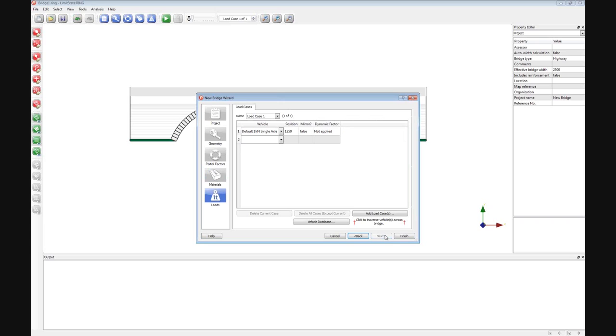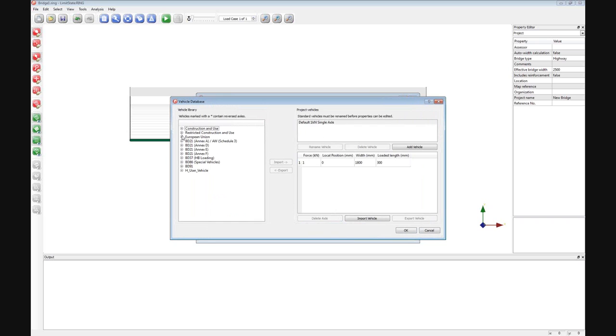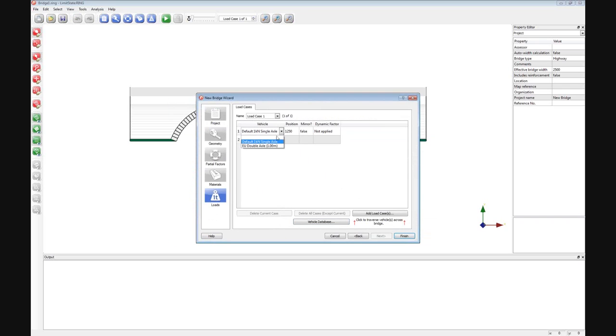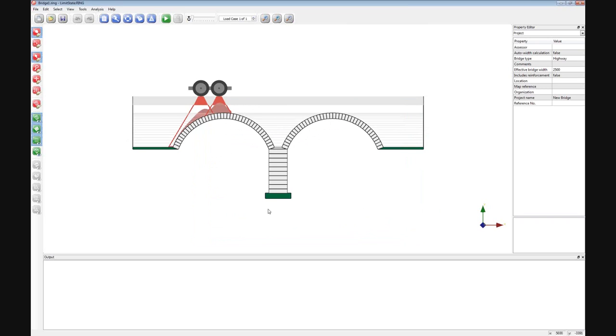And then finally in the wizard we move on to the load case area. By default we've got a 1kN single axle, but if I click the vehicle database, then you can see that we've got a series of vehicles built into the software which we can use for the bridge in question. So for example, I might want to choose an EU European Union double axle loading, where we've got two axles at 1m centers. To do that I will click Import, and then I can apply that to my bridge. And if I click Finish, then I end up seeing a view of the bridge that I've defined with the load.